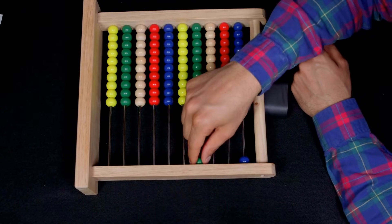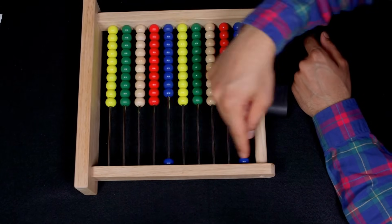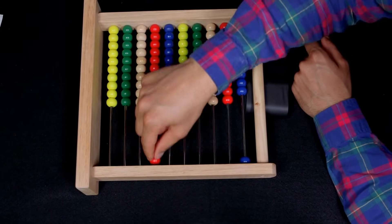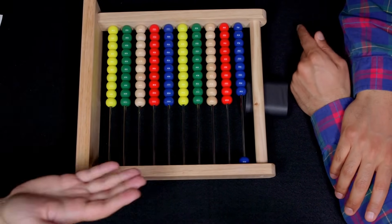And this would be 10,000 of the blue beads, and this would be 100,000 of the blue beads. This would be a million of the blue beads, and we're going to be able to represent all the numbers in between one and say a million.